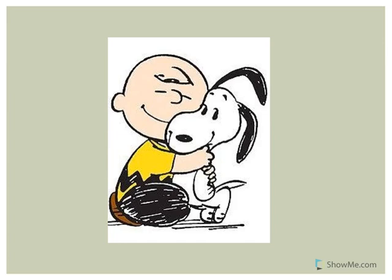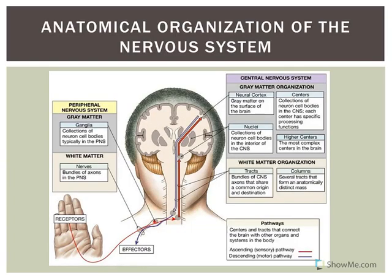I want to discuss a little bit of terminology about the organization of the nervous system. The central and peripheral nervous system both include gray matter as well as white matter. Gray matter is where you have cell bodies — it's the area of integration and processing of information. In the peripheral nervous system, groups of cell bodies of neurons are called ganglia, such as the dorsal root ganglia. In the central nervous system, groups of cell bodies of neurons are found in the nuclei.